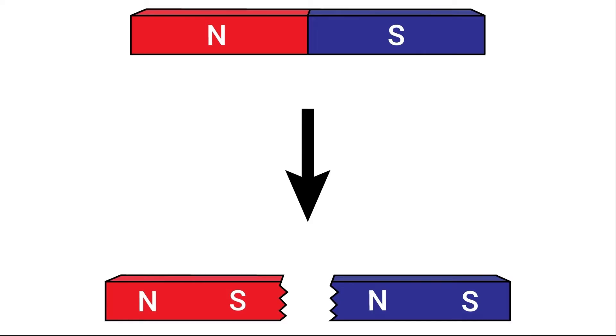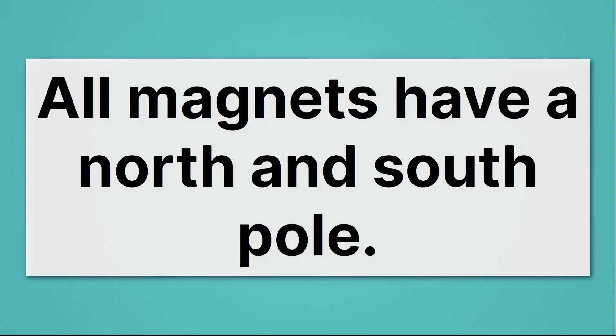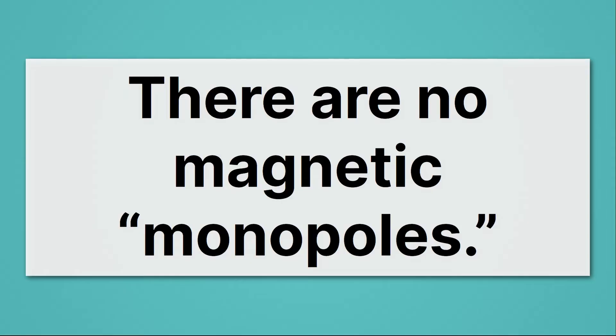If you snap a magnet in half, you get two new magnets, each with a north and a south pole. So all magnets have a north and south pole. There are no magnetic monopoles. That is, a magnet with just a north or a south pole.